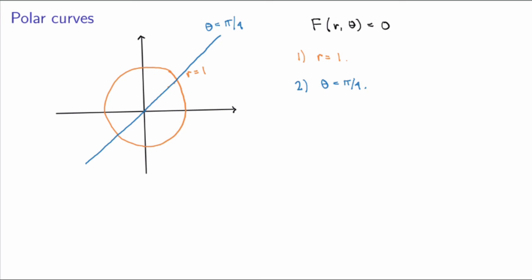These two examples were relatively simple, but sketching polar curves can be pretty complicated. Let's look at the simple-looking equation r = cos(2θ). What is the corresponding polar curve? I'll leave the sketching as an exercise, but the result is something really cool — it's a beautiful four-leaved rose.